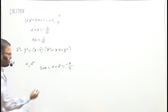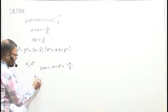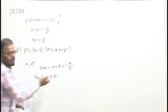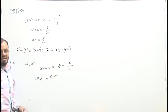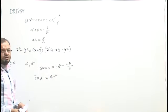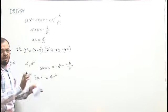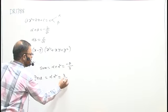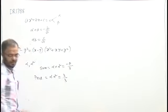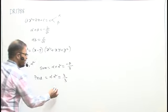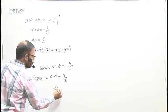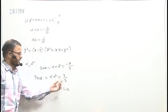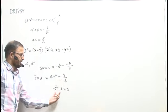आईए अब यहाँ पर product of roots लिखेंगे. Product of roots अगर लिखेंगे, तो alpha into alpha square. I can say it is equal to C by A. According to this question, C is 3 and A is also 3. तो यहाँ पर alpha cube equal to 1 मिला है — 3, 3 cancel हुआ.